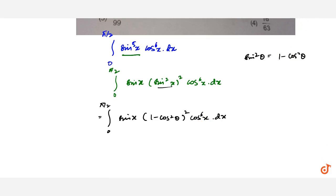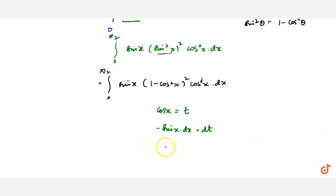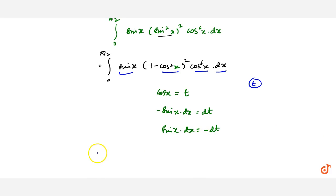Now here we substitute t = cosx. So sinx dx is replaced with minus dt, and the limits also change accordingly.